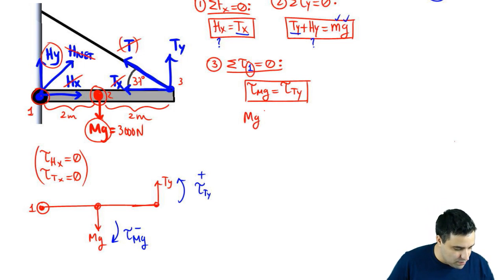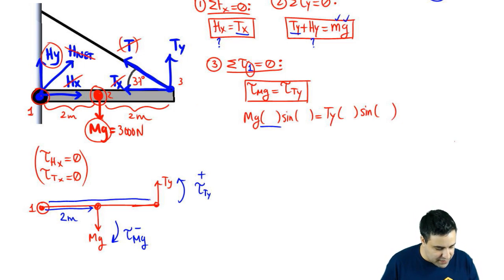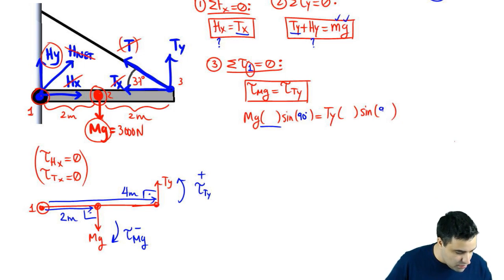Theta is not necessarily the 37. Be careful. The R vector for Mg looks like this. It has a length of half of the distance of the length, which is length of the bar, which is 2. And then this vector here is the entire thing, 4 meters. Both of them, notice, make a 90-degree angle here. So sine is actually 90, not 37, because we're not talking about T. We're talking about Ty.